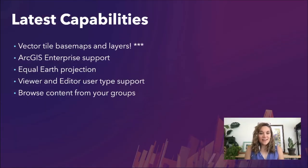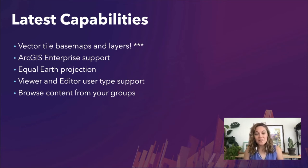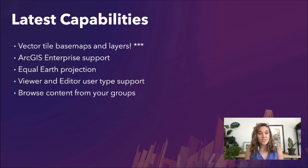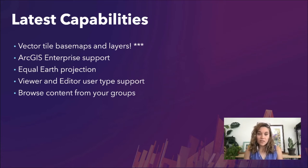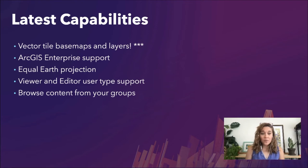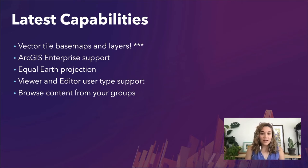Let's talk about some of the exciting new things happening with Maps for Adobe. The most exciting one in my opinion is vector tile basemaps and layer support — a game changer for cartographers. We also have ArcGIS Enterprise support, which is key for users that need to use enterprise within their organization. We're also supporting the Equal Earth projection, supporting more user types like viewer and editor so more people can use the extension, and you can now browse content from your groups.